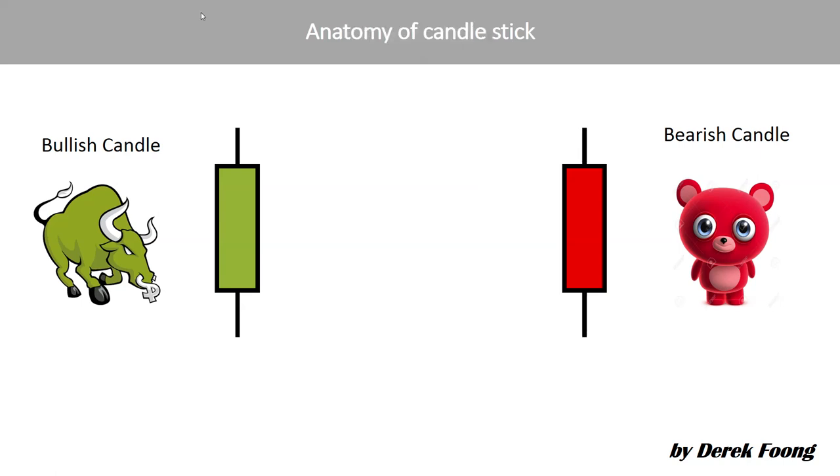To know about candlestick charting, we look at the anatomy of a candle. Most of the time when you look at your chart you can see green and red candles. The green represents optimistic sentiment and the red represents pessimistic sentiment.